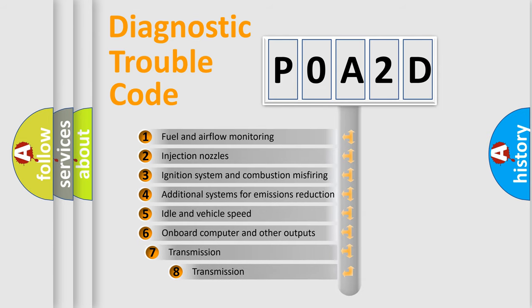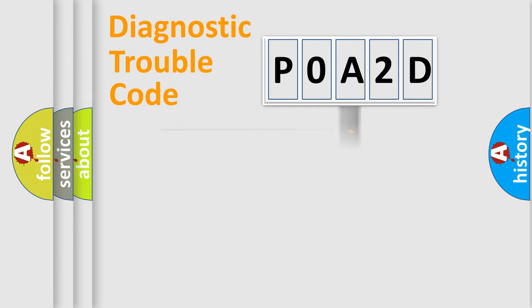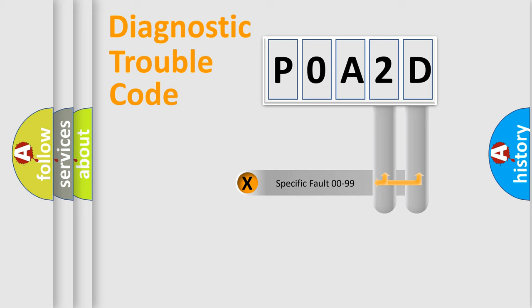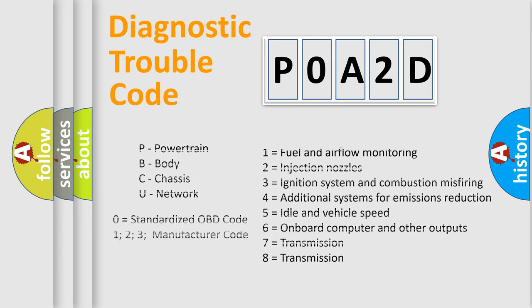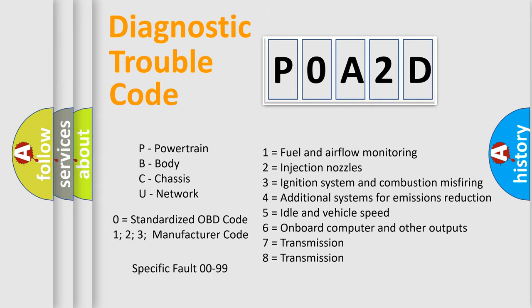The third character specifies a subset of errors. The distribution shown is valid only for the standardized DTC code. Only the last two characters define the specific fault of the group. Let's not forget that such a division is valid only if the second character code is expressed by the number zero.